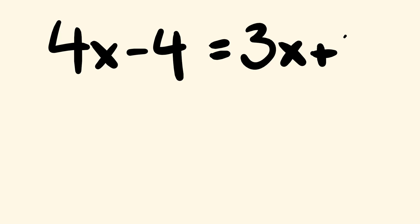So something that looks like this, say we had 4x minus 4 and that was equal to 3x plus 2, and how we can go through and solve this almost instantly.